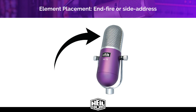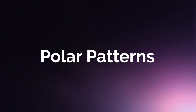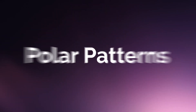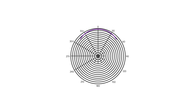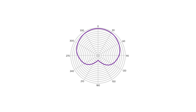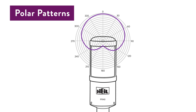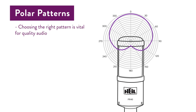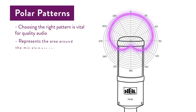So now that you know about element placement, we can talk about polar patterns. Every microphone has a polar pattern. This is a polar pattern chart that you might find on a manufacturer's website. The polar pattern determines how a microphone will pick up audio. This matters because depending on how you intend to use the microphone, the polar pattern can help or hurt your audio. The polar pattern is the area around the microphone element that will capture audio.